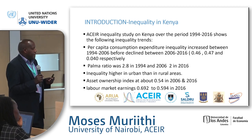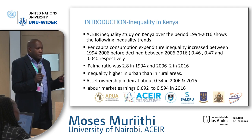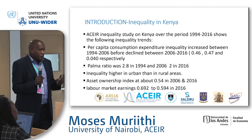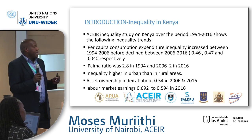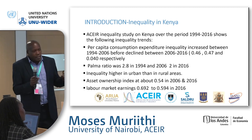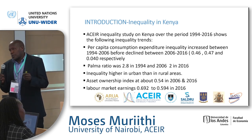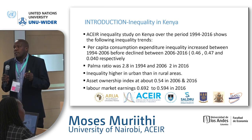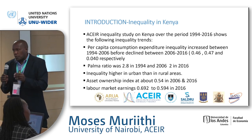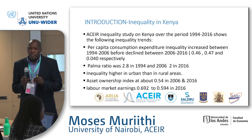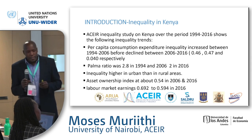The Palma ratio was at 2.8 in 2006, which was a high point, but it went down to 2.0 in 2016 — consistent with the declining Gini coefficient. One thing that is quite obvious is that the urban inequality Gini was higher than the rural Gini, which is not unexpected since rural households tend to have more similar living standards.